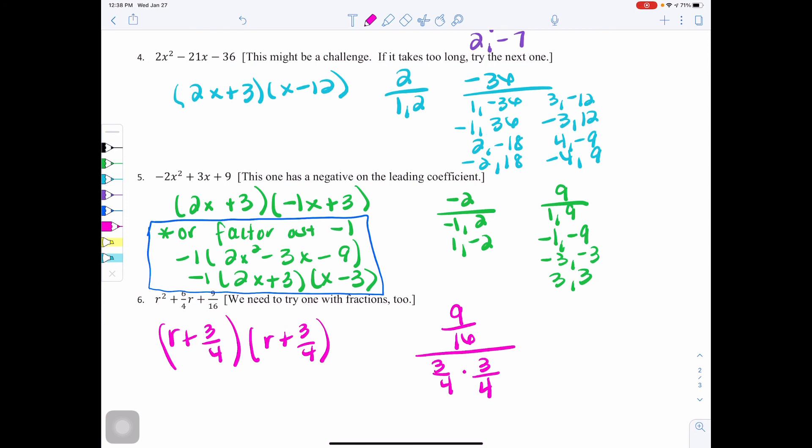Then in number 6, R squared plus 6 fourths R plus 9 sixteenths involves fractions. So we do need to be able to be prepared with fractional trinomials as well. Here you should get R plus 3 fourths times R plus 3 fourths. So it did follow one of the patterns we learned about, which kind of helped out and made it a little bit easier. 3 fourths plus 3 fourths is the 6 fourths, and then when you square it, you get 9 sixteenths.